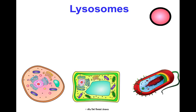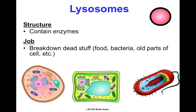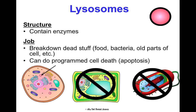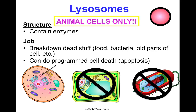Lysosomes are small circular organelles — not very visually distinguishable, so you wouldn't be asked to label them in a picture. They contain enzymes and their job is to break down dead material: food, bacteria, old parts of the cell, harmful substances. They can also perform programmed cell death, known as apoptosis, which we'll discuss more in Concept 3. Lysosomes are found in animal cells only — not in plant cells or prokaryotic cells.